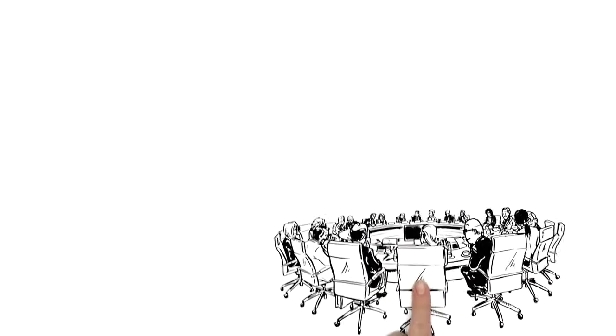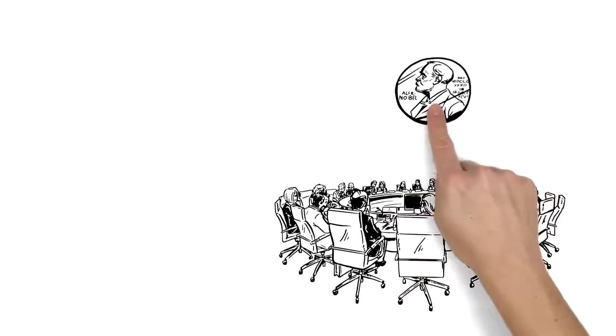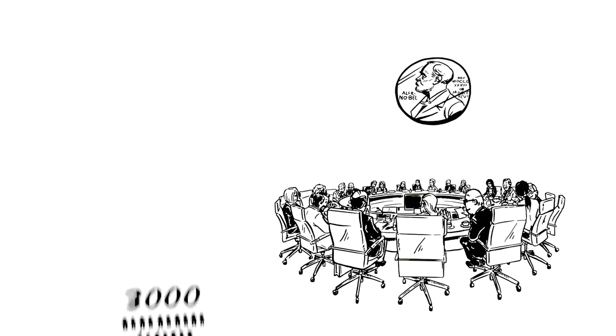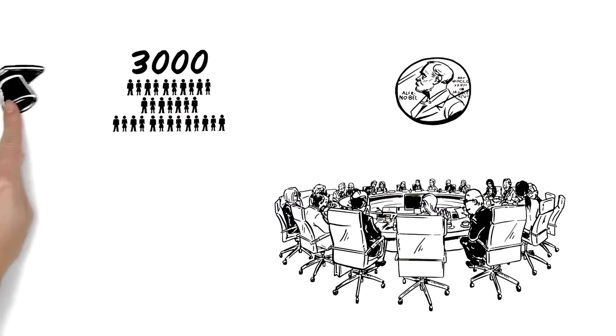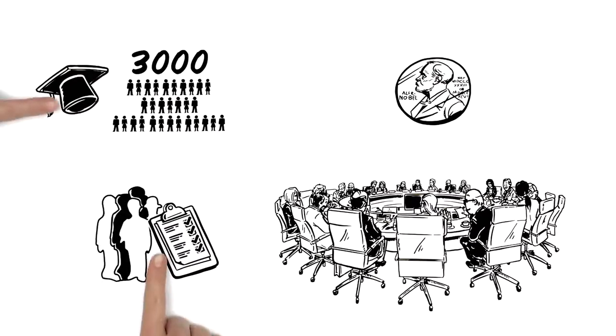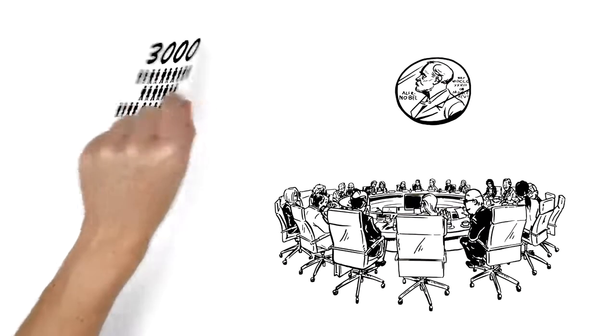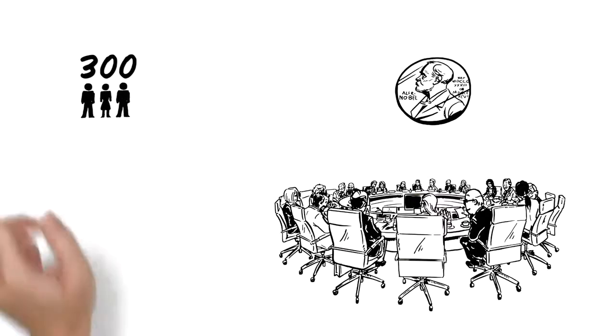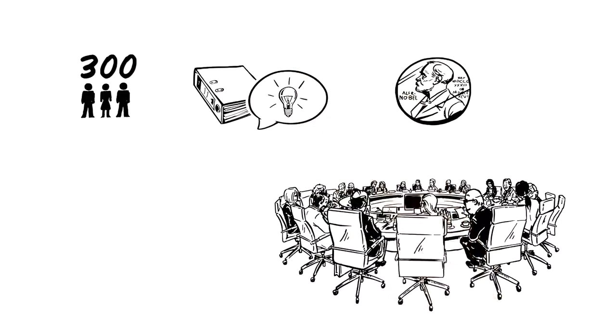A separate committee awards each prize, but the processes are similar. About 3,000 people, usually academics, have the right to nominate candidates. From these, the Nobel committees choose around 300 potential recipients and prepare a report reflecting the advice of experts. The prize awarding institutions then select the laureates by a majority vote.